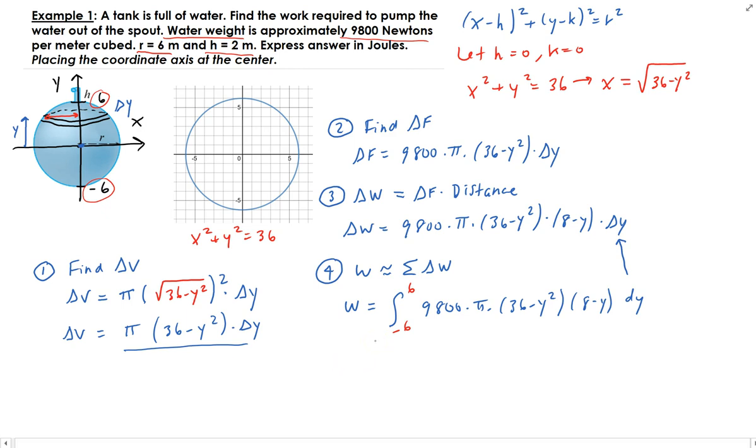So integrating this just using the power rule, you end up getting 22,579,200 pi joules.